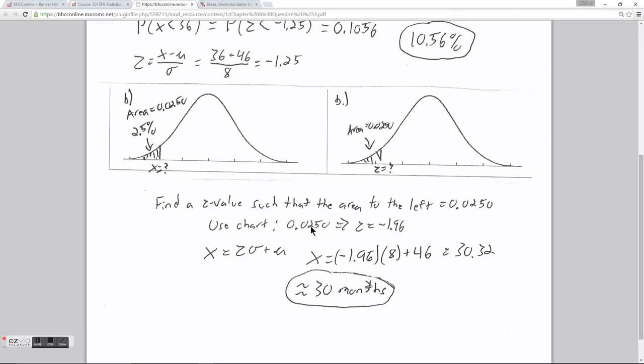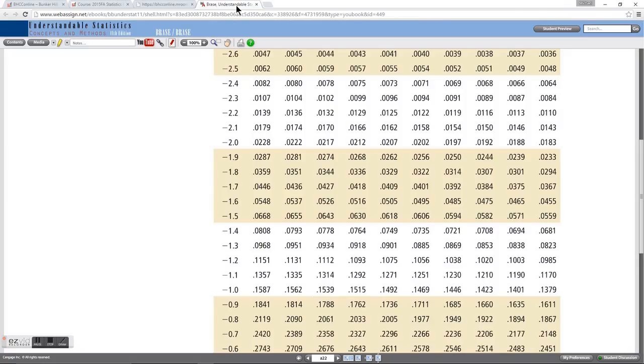I'm going to use the normal curve, similar to how I did in example number 2, and then I'm going to look up an area first, and then find what the equivalent z value is. Since this is an area to the left, I'm going to look up this number directly on my table. I know it's going to be on the side with a negative z value.